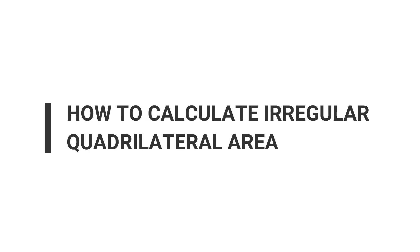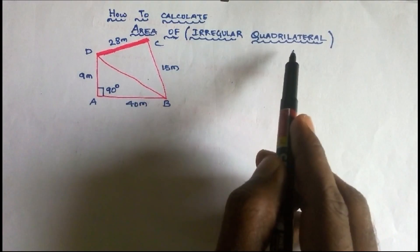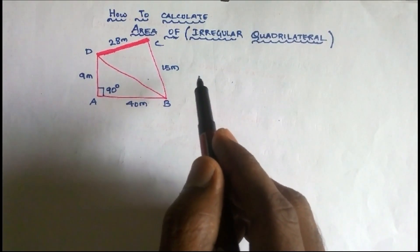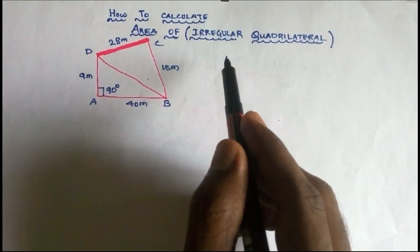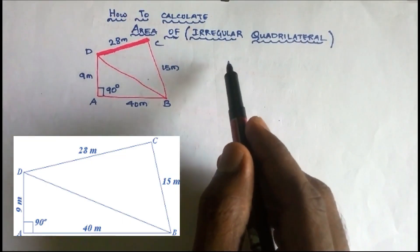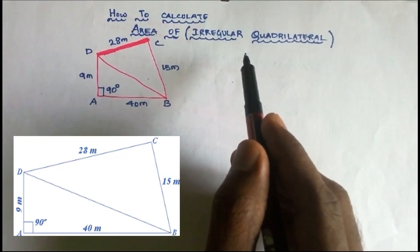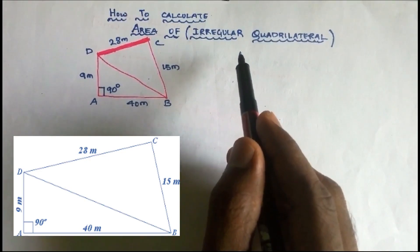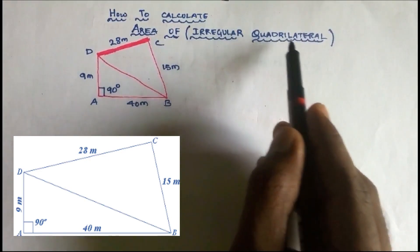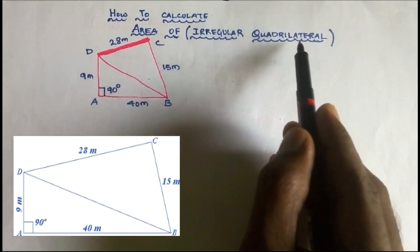Hello. In this video, we are going to talk about how to calculate the area of an irregular quadrilateral land. In the last video, we used irregular land. Here we are going to talk about quadrilateral land.